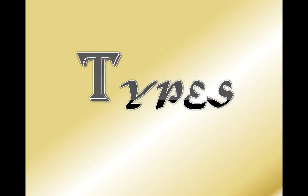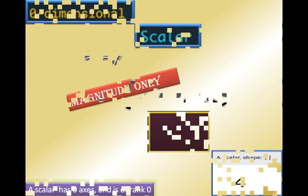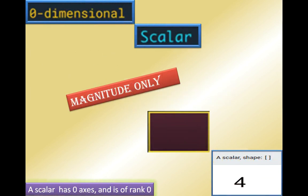Let's talk about the types. The first one is zero-dimensional, also known as scalar. A tensor that contains only one number is called a scalar, or scalar tensor, or zero-dimensional tensor, or 0D tensor — that means it has magnitude only. A scalar has zero axes and is of rank zero, as shown in the diagram.